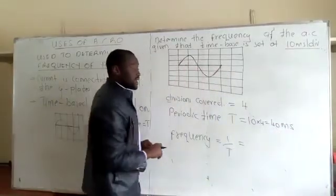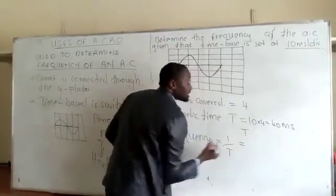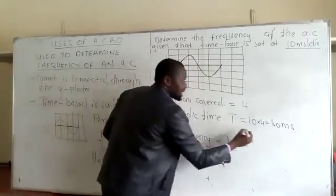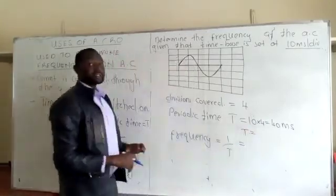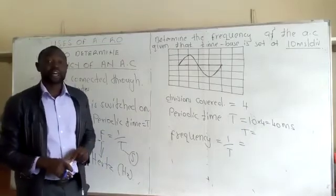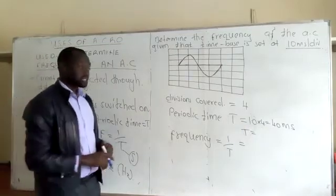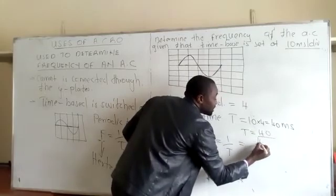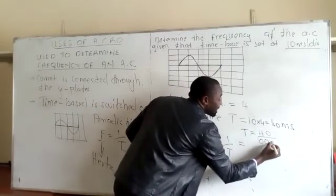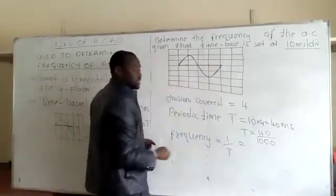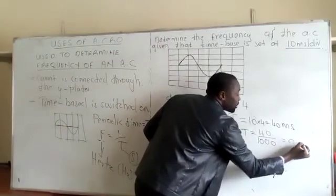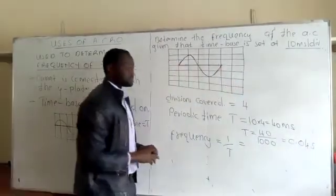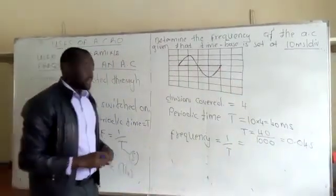In seconds, we need to get this periodic time in seconds. One second is equivalent to 1,000 milliseconds, therefore we take 40 divided by 1,000, which gives us 0.04 seconds.